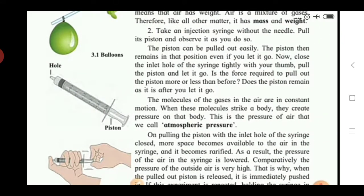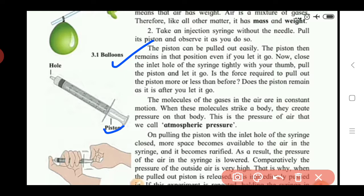Now close the inlet hole of the syringe tightly with your thumb. In the first step, the inlet hole is open, so the piston can be easily pulled — no thumb is needed. The piston remains in position once pulled.